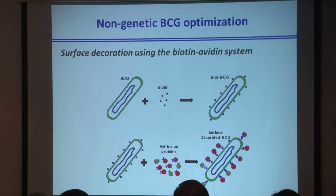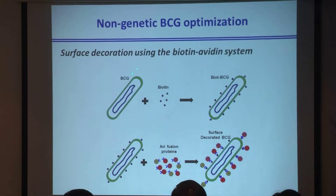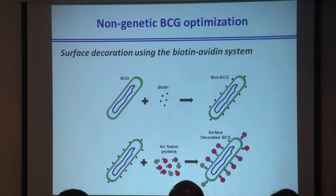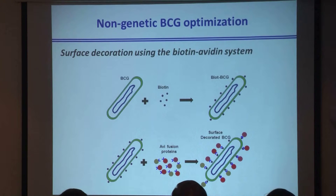So we thought about a non-genetic approach — very simple, and anybody can do it. It's a quick surface biotinylation: you mix BCG with commercial biotin and the whole surface becomes biotinylated. Then you add the protein of interest — not only one but a combination, such as antigens plus modulators of antigen presentation. You add an avidin tag to these proteins, and you have bacteria expressing proteins of interest without any extra gene.